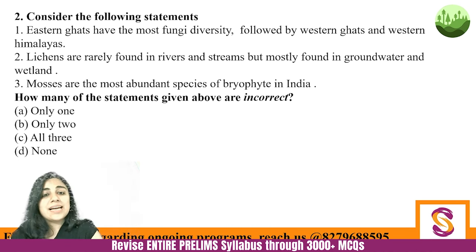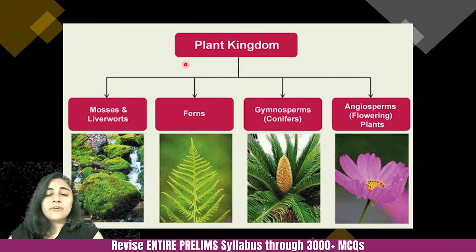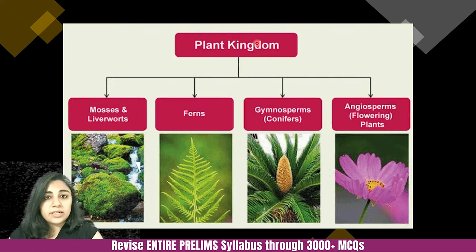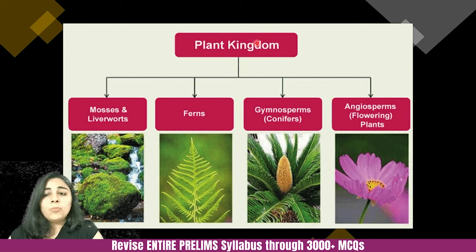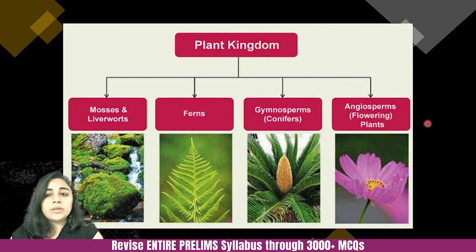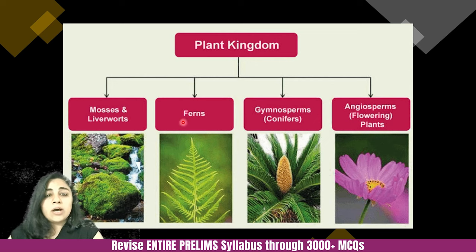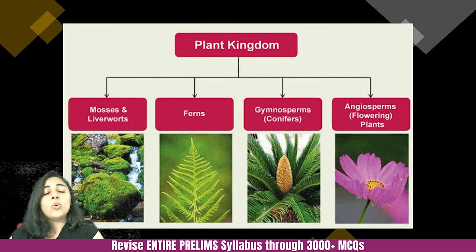Let's see the classification of plants, then we'll come back to this question. We have five kingdoms, and one of those is the plant kingdom. Broadly, the plant kingdom is classified into four categories: mosses, ferns, gymnosperms, and angiosperms. We have just done gymnosperms and angiosperms. Now these two — mosses and ferns — we need to see in more detail.